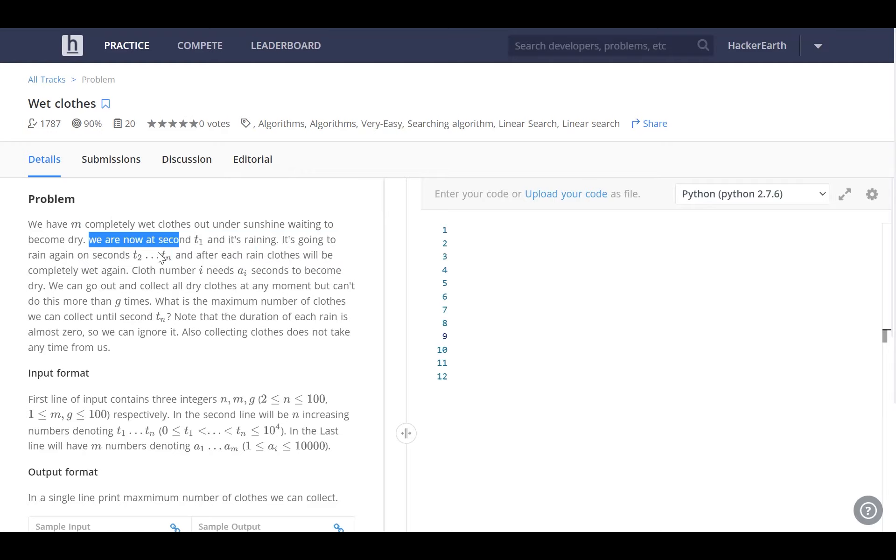And after each rain, the clothes are going to become wet again naturally. Shirt number i needs a of i seconds to become dry. So all the shirts are made up of different materials so they require different amounts of time to become dry.